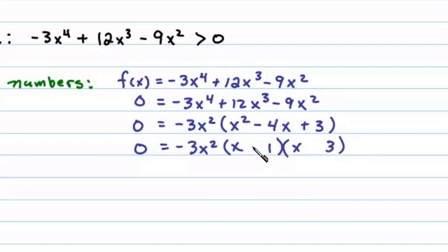...(x - 1) times (x - 3). If they're both negative, that adds up to -4, and -1 times -3 is positive 3. So at this point we can set each factor equal to 0.